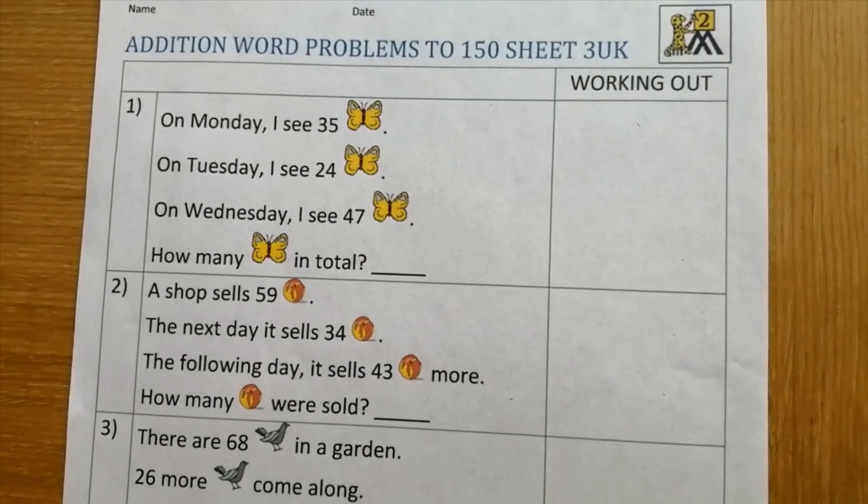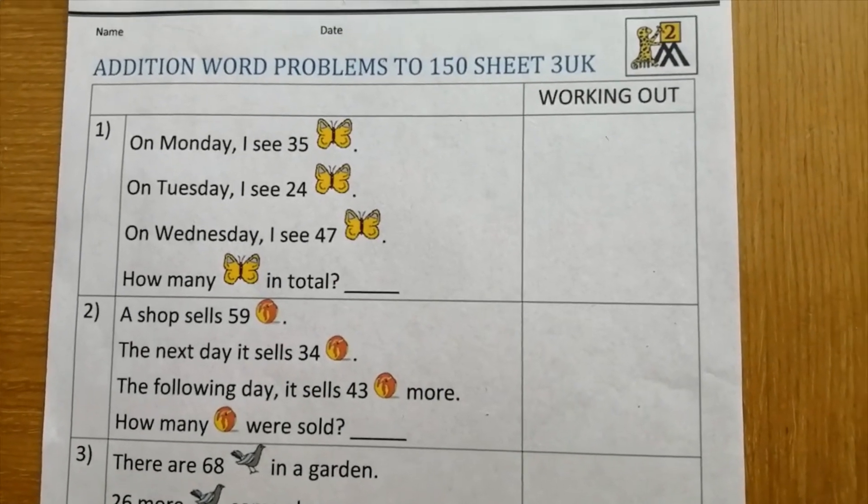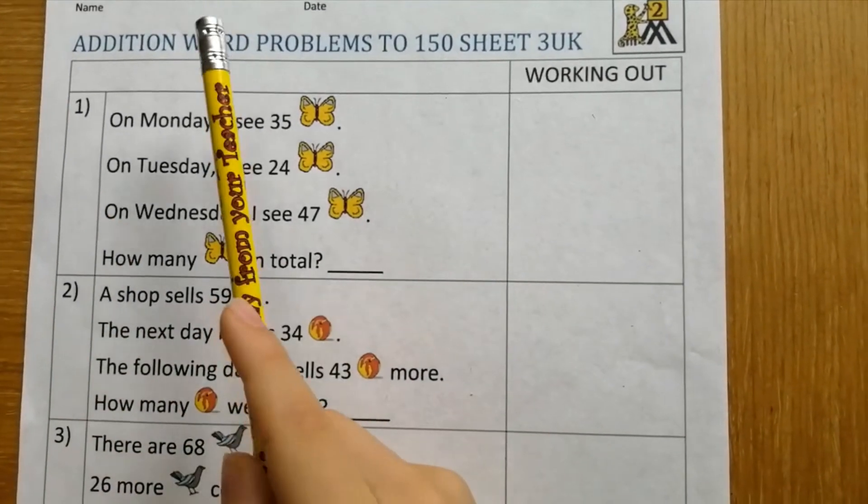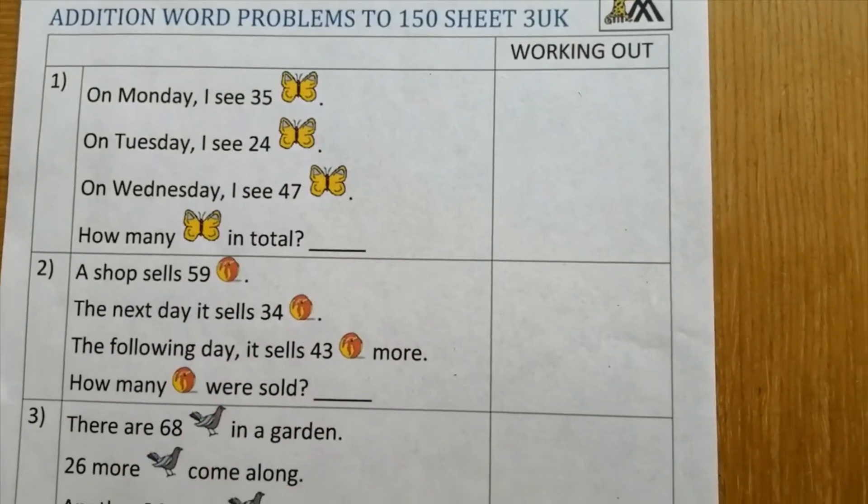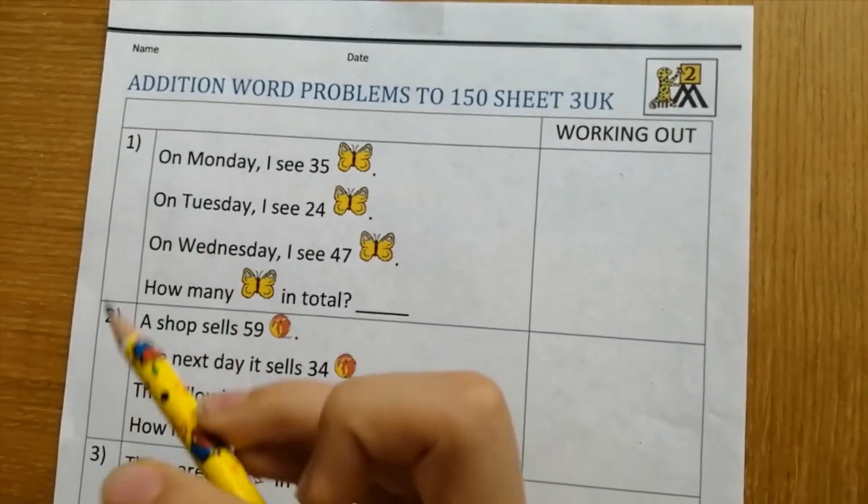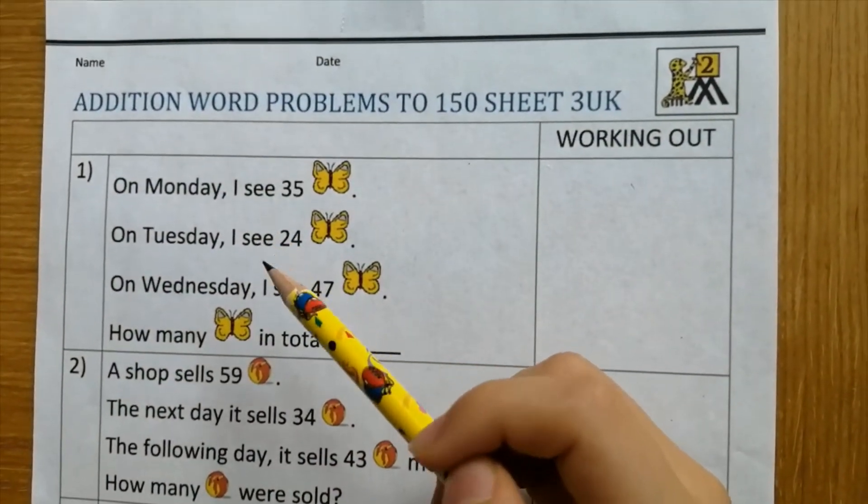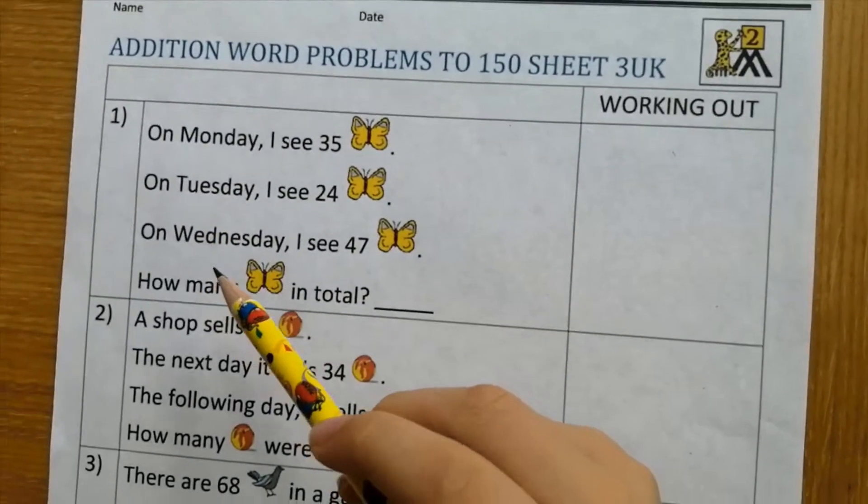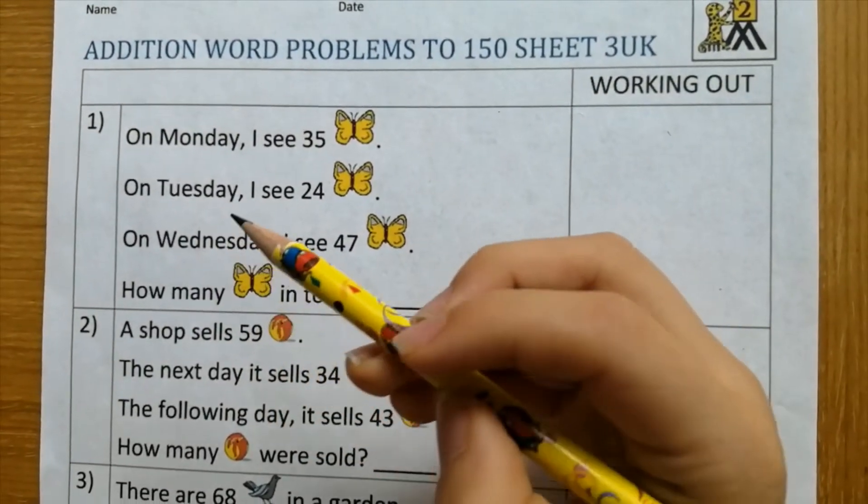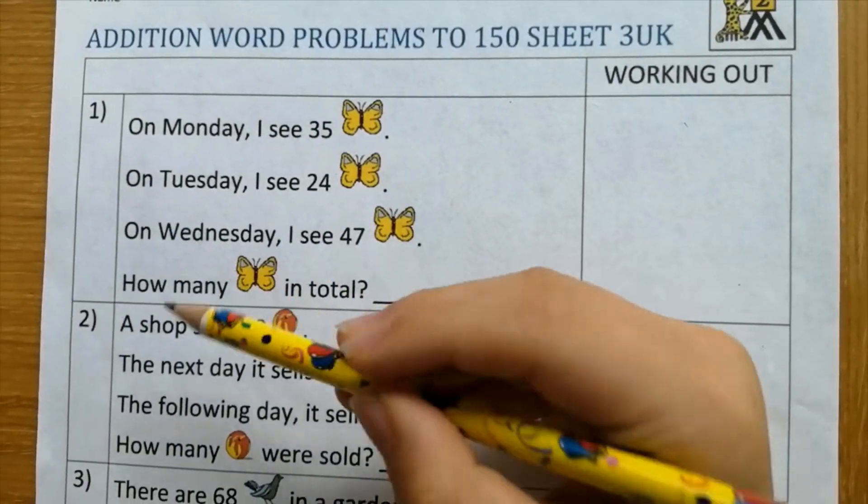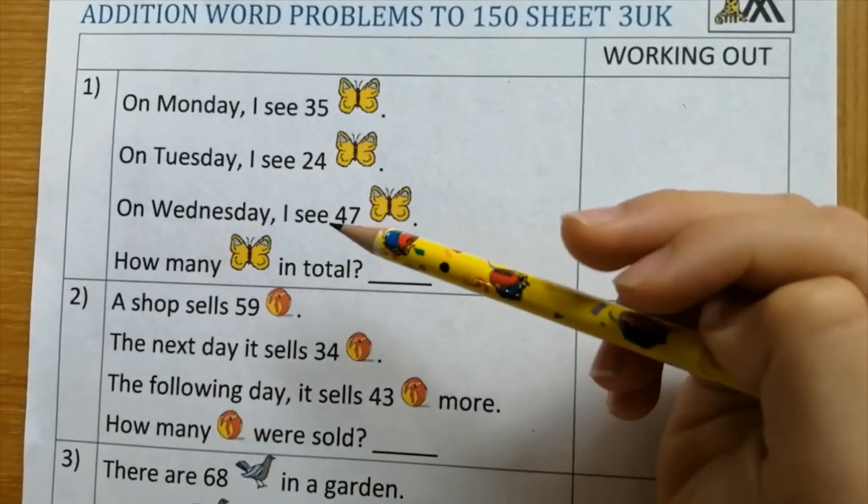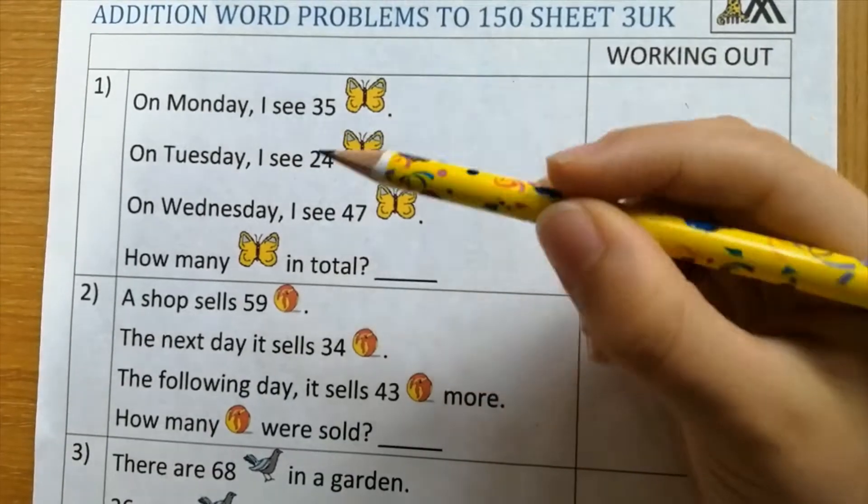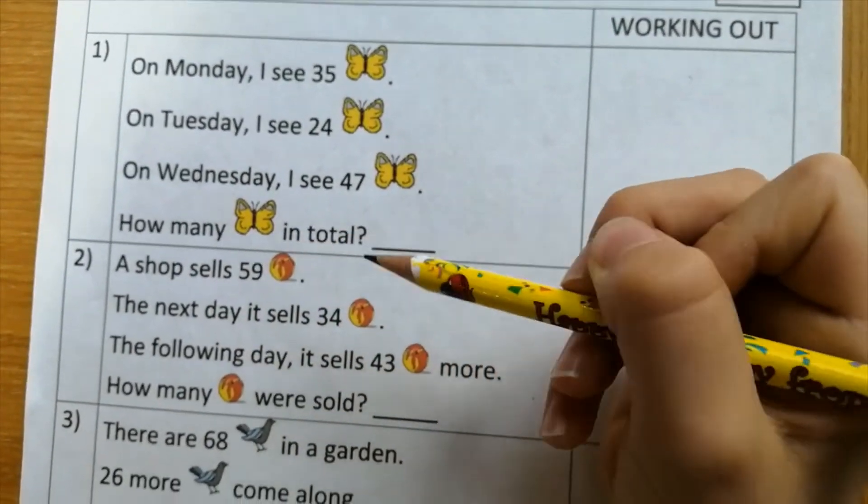Hi guys. Today we are going to study addition word problems. On Monday I see thirty-five butterflies. On Tuesday I see twenty-four butterflies. On Wednesday I see forty-seven butterflies. How many butterflies in total?